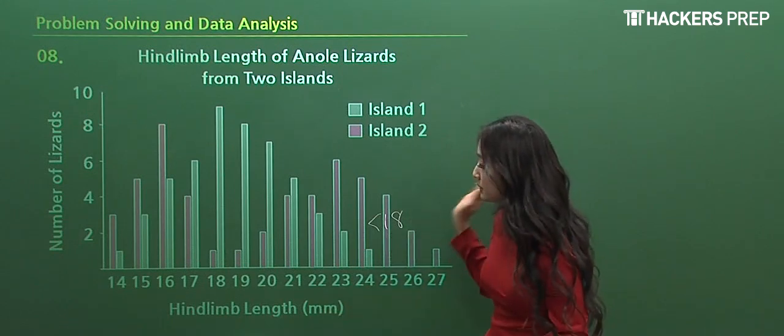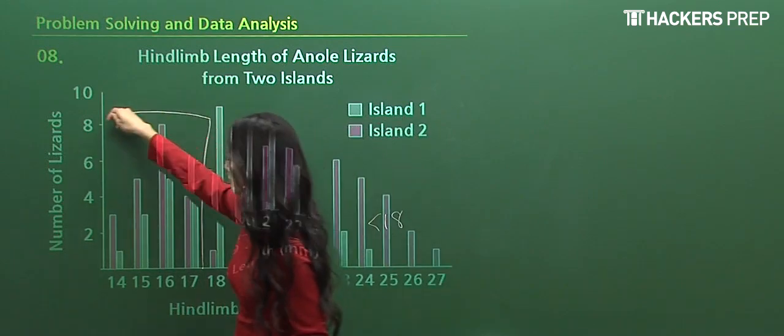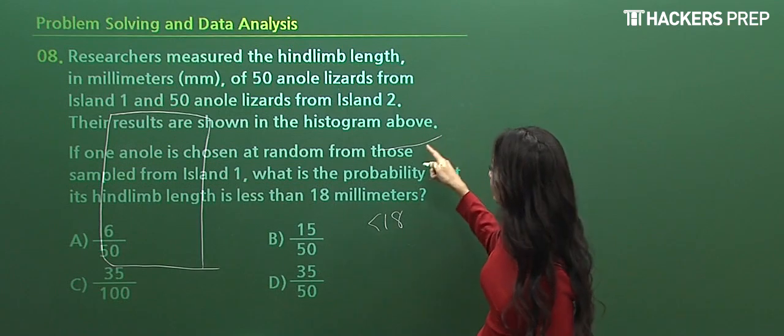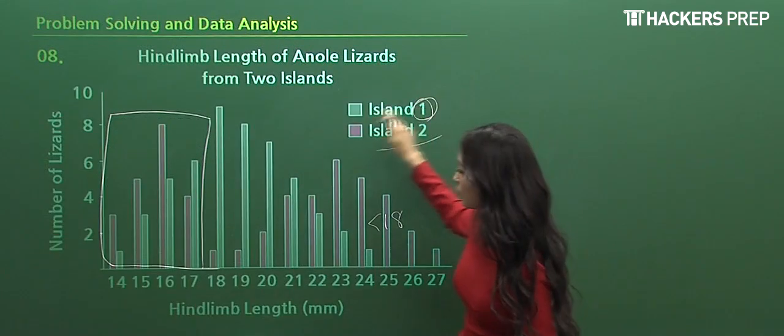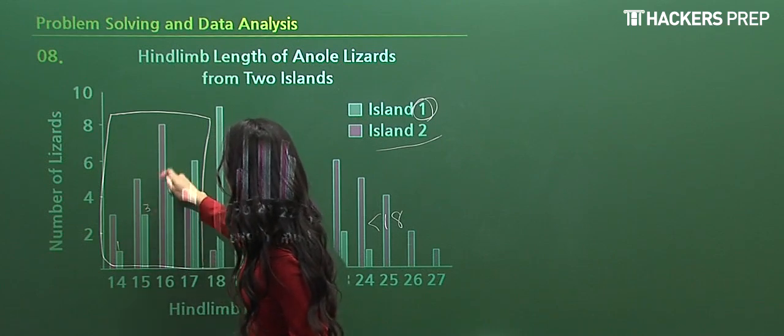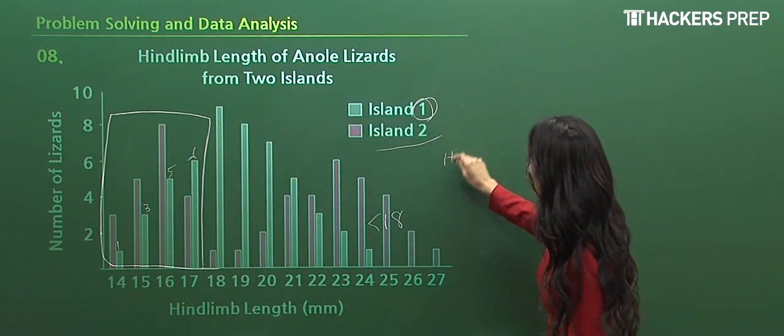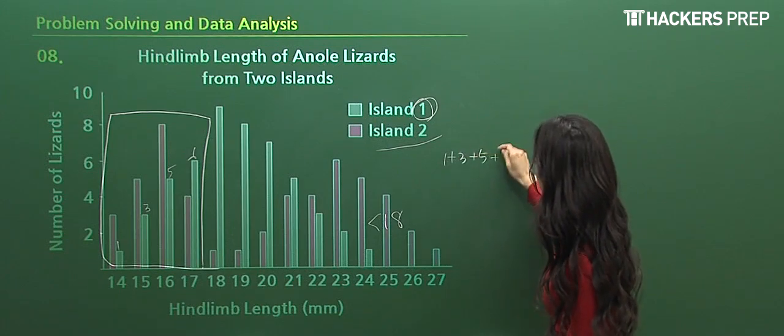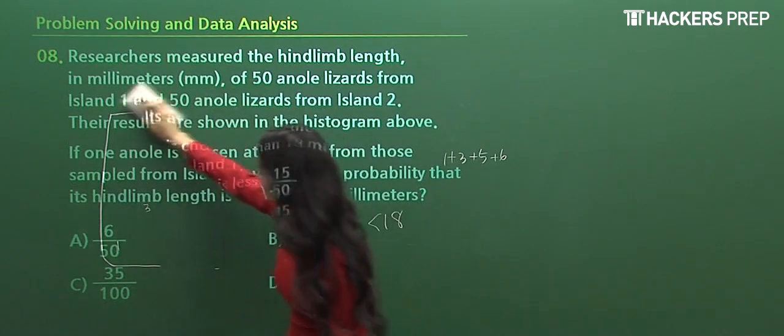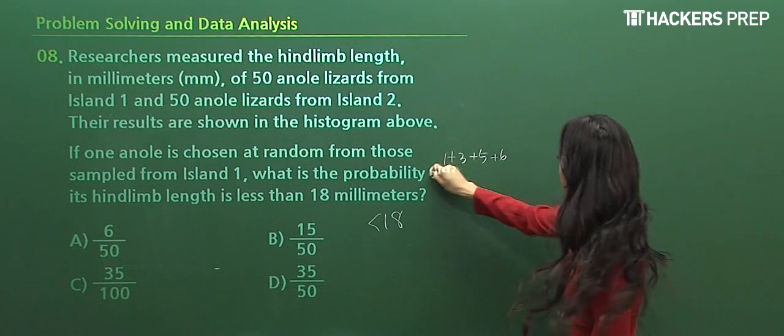Let's go back real quick. When we look at the length, if it's below 18, it means that we are not including 18. So for the first island, which island were we looking at? Island 1, it's the white bar. We have 1, 3, 5, and the final value of 6 added together. So we have 1, 3, 5, and 6 added together. And do they tell us what the total number of lizards were? I think they did in the question, right? It was 50.